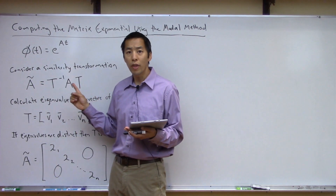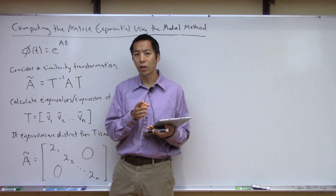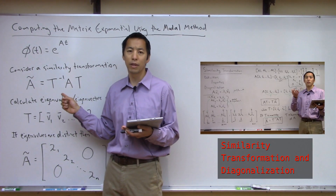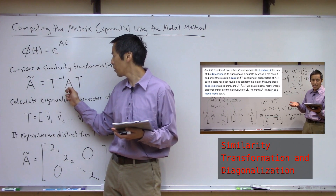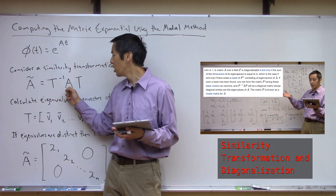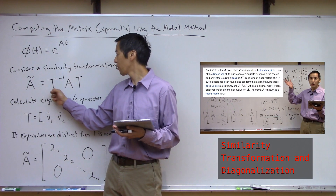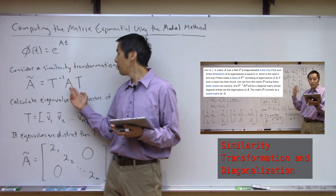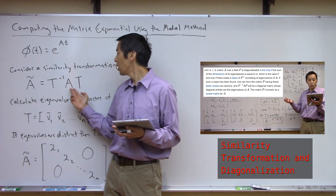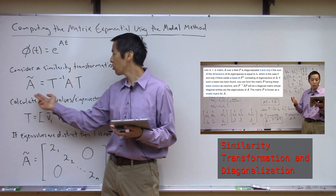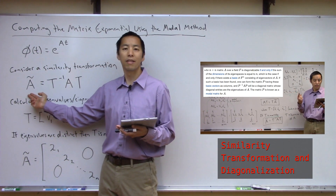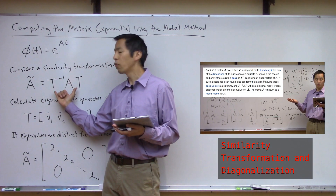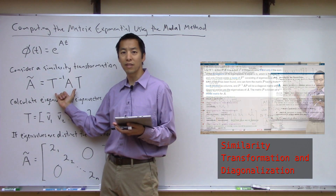To do that, let me refresh your memory and recall that in a previous video we discussed the idea of a similarity transformation. If you have some matrix A, you can pre-multiply by T inverse and post-multiply by T. As long as T is invertible, you have a similarity transformation where you take matrix A and turn it into some similar matrix A-tilde.